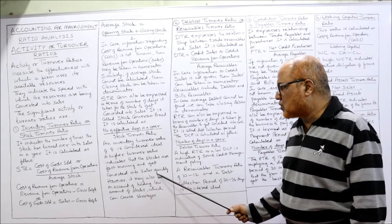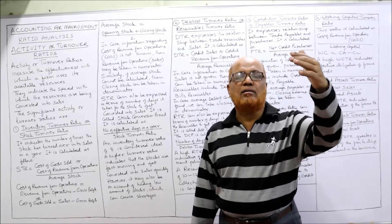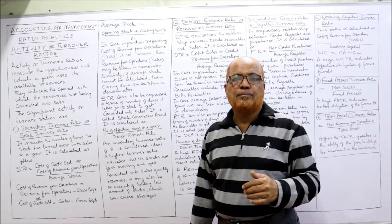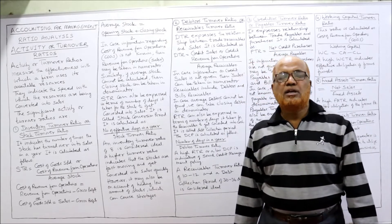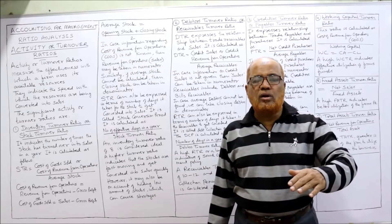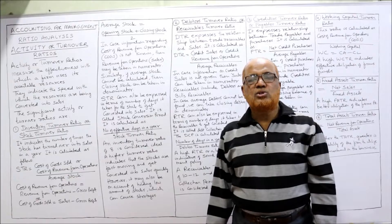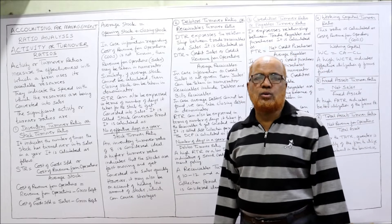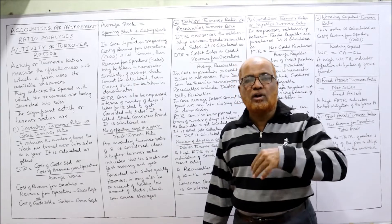A high stock turnover ratio indicates that stocks are fast-moving and get converted into sales quickly. However, a very high ratio may also indicate holding low amounts of stock, which can cause shortages. There is always a danger of insufficient stock to meet customer demand. In examinations, you are not only asked to calculate the ratio but also to give its interpretation — which is what has been explained here.